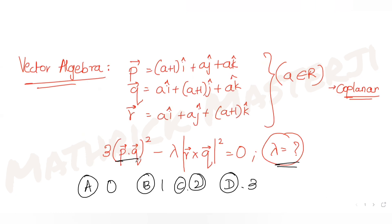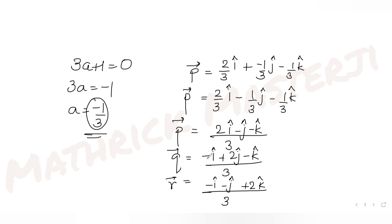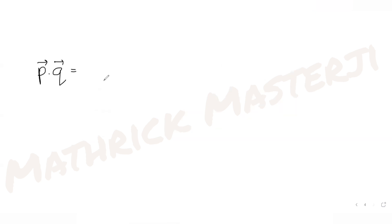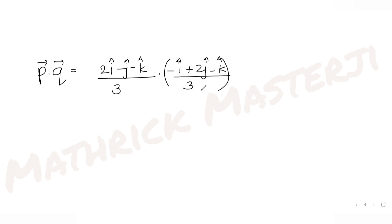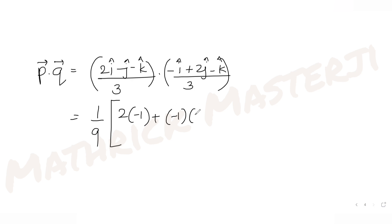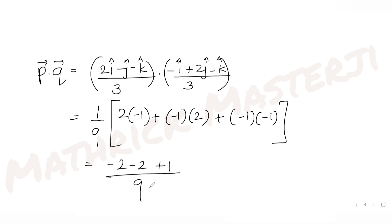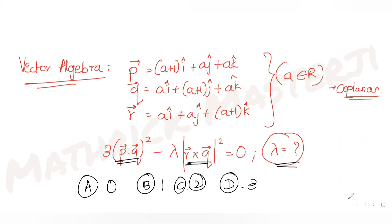Now let's find p·q and |r×q|². For the dot product p·q: multiplying (2i − j − k)/3 by (−i + 2j − k)/3 gives (1/9)[2×(−1) + (−1)×2 + (−1)×(−1)] = (1/9)[−2 − 2 + 1] = −3/9 = −1/3. So p·q = −1/3.